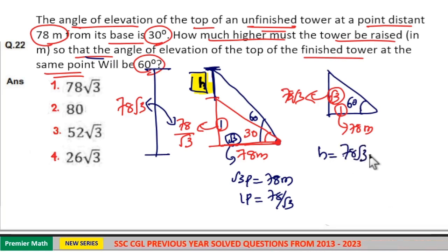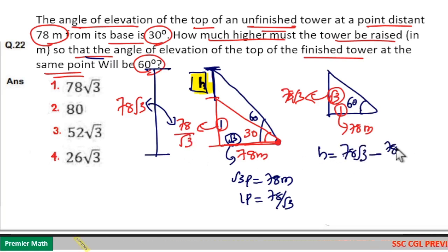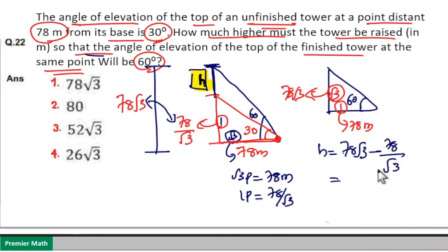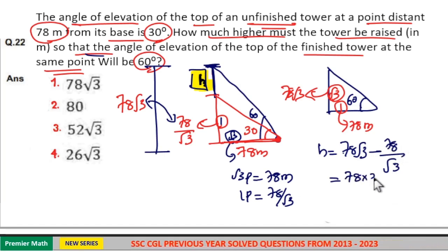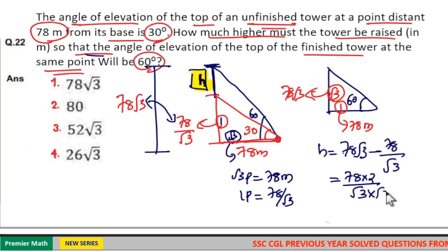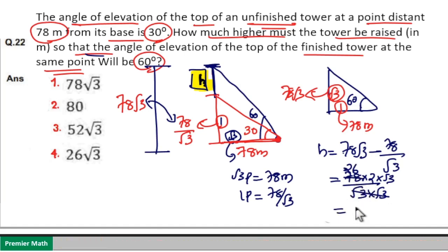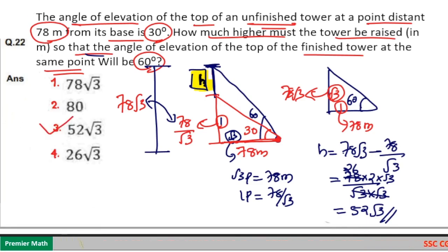Height h equals the new height minus the old height: h = 78√3 − 78/√3. Multiplying out: 78√3 × √3 = 78 × 3, so h = (78 × 3 − 78) / √3 = (78 × 2) / √3. Multiplying numerator and denominator by √3, and since 78/3 = 26: h = 26 × 2 × √3 = 52√3. So option 3, 52√3, is the answer.